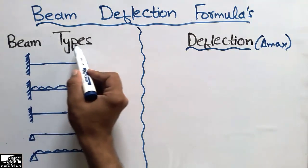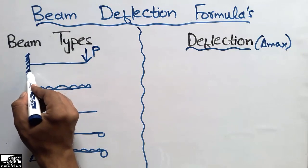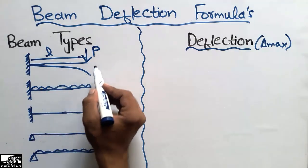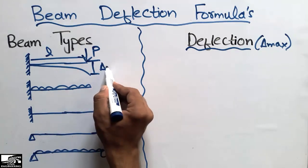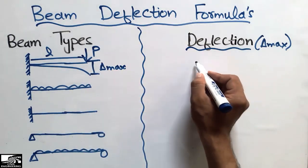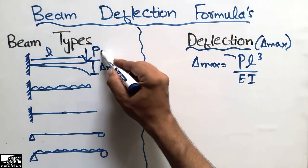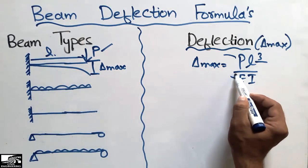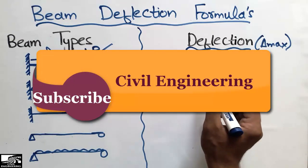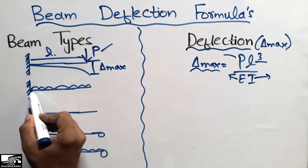The first beam type is a cantilever beam with a concentrated load P at the end. The length of this beam is represented by L. It will deflect maximum at the free end, represented by delta maximum. The maximum deflection of this cantilever beam with a concentrated load at the end is equal to PL³ divided by EI, where P is the load, L is the length, E is the modulus of elasticity, and I is the moment of inertia.